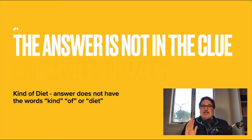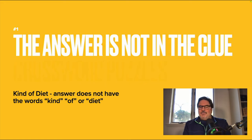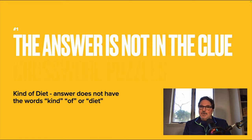Number one: the answer is not in the clue. So if the clue is 'kind of diet,' the answer does not have the words kind, of, or diet. Even pronouns, even prepositions — any word that's in the clue is not in the answer. Sometimes your instinct has an answer in your head, but if that answer contains a word already in the clue — like 'the' — you have the wrong answer. If 'the' is in the clue, 'the' is not in the grid for that answer.